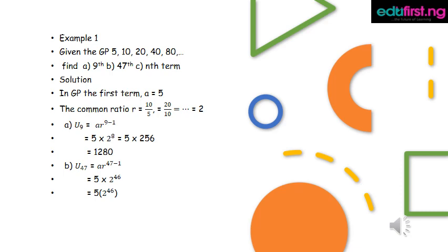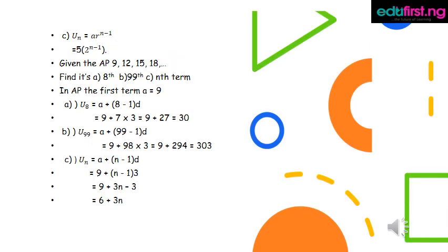For part (b), the 47th term: u_47 equals a times r raised to power 47 minus 1, equals 5 times 2 raised to power 46. For part (c), the nth term: u_n equals 5 times 2 raised to the power n minus 1.